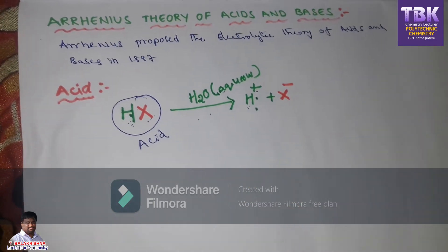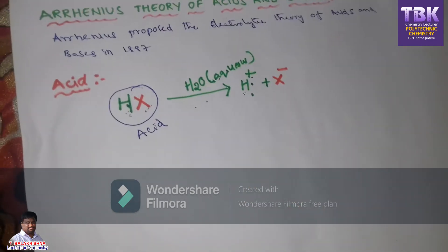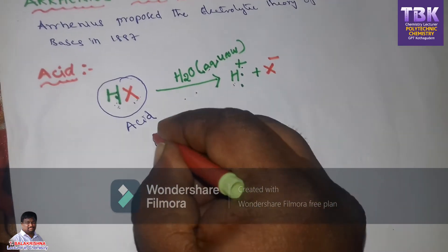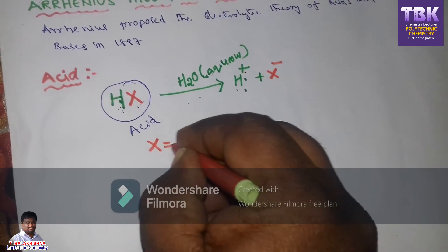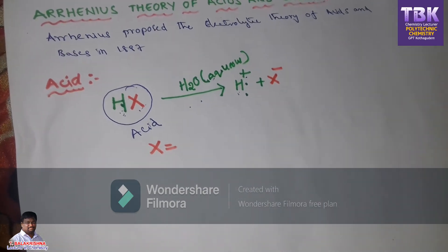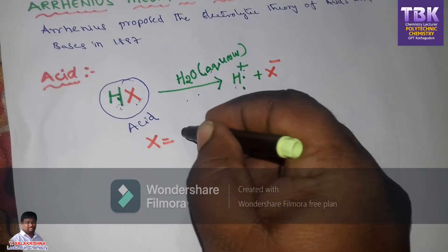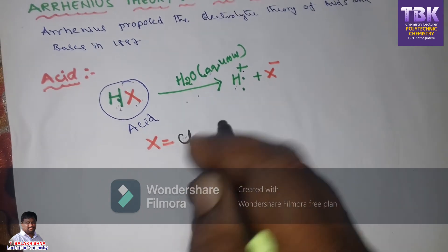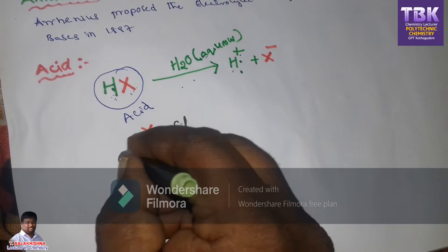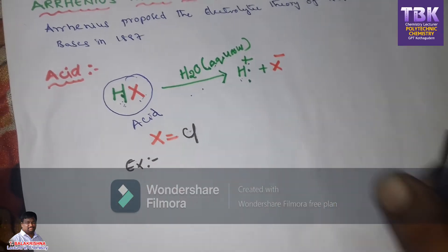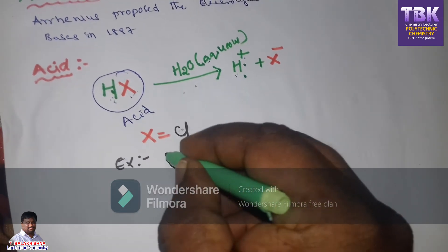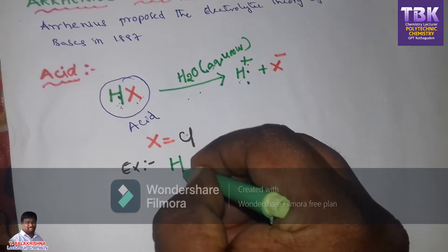For examples of acids, we substitute values for X. If you take X equal to Cl, the molecule is HCl, which is hydrochloric acid.